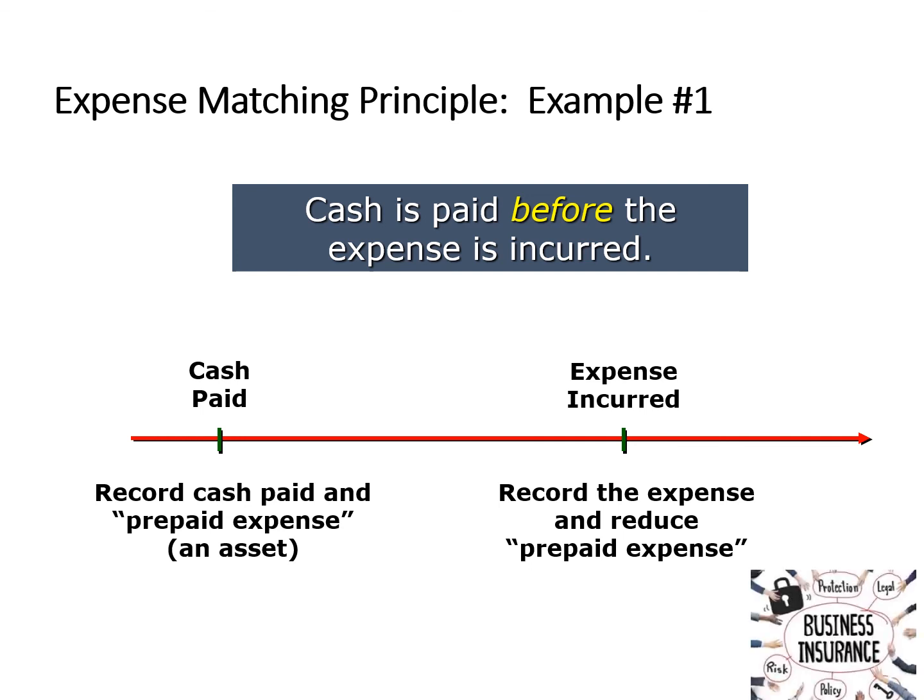A good example is paying for an insurance policy for the entire year. We pay for that insurance policy up front — let's say January 1st — but we use the insurance policy over the course of the year. On January 1st, we recognize that our cash is going down and we also record an asset, prepaid insurance. As time goes on, we use up that prepaid insurance, so we recognize the use of that insurance by recording an expense and correspondingly decreasing the asset, prepaid insurance, on our balance sheet.